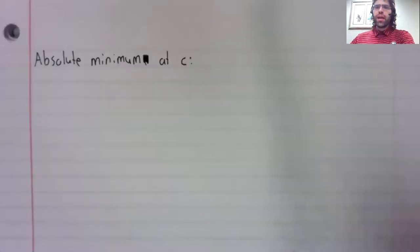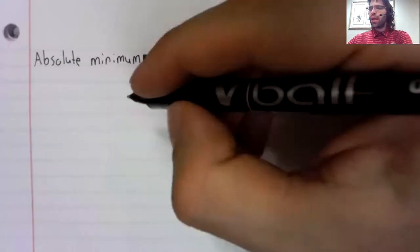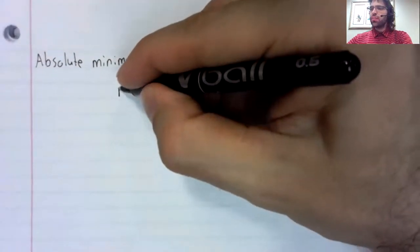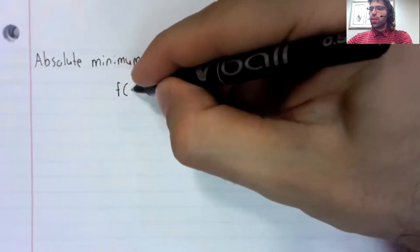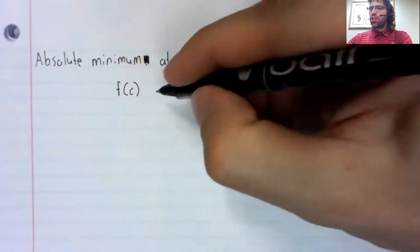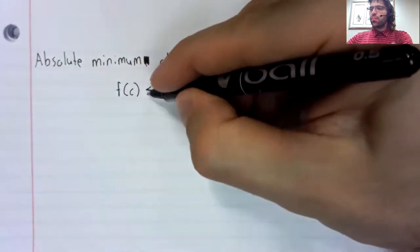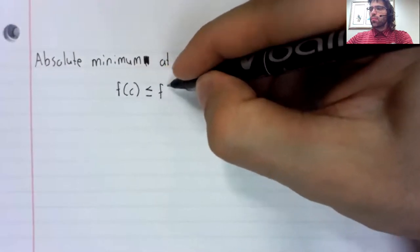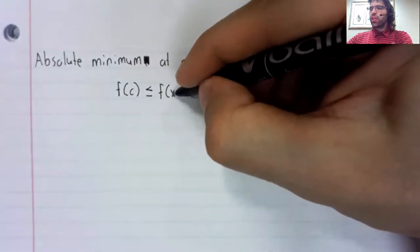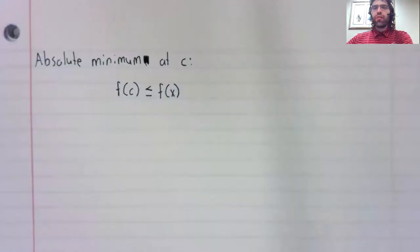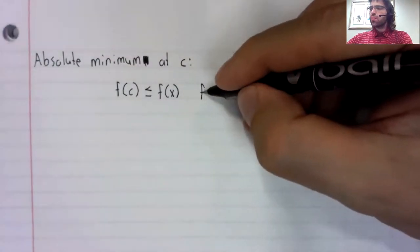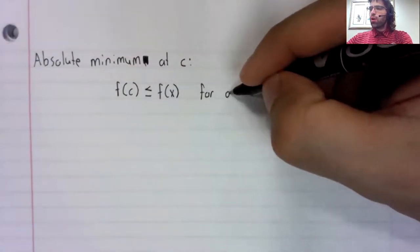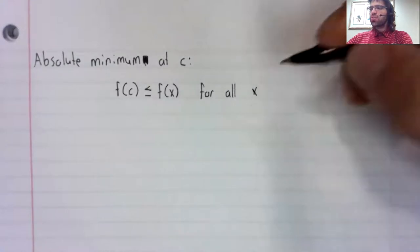A function f has an absolute minimum at c if f of c is less than or equal to f of x for all x.